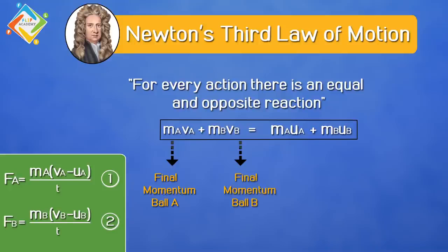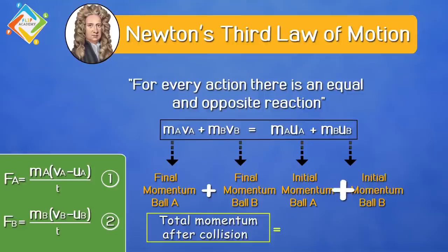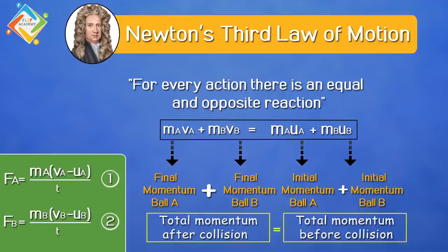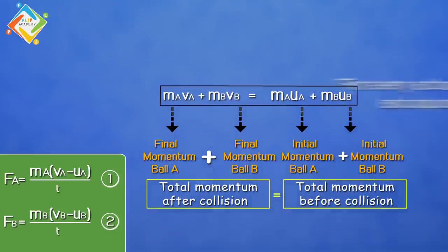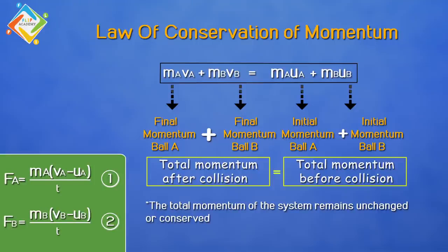Considering the left-hand side of the equation, mA·vA is the final momentum of ball A, and mB·vB is the final momentum of ball B. Adding these gives the total momentum after collision. On the right-hand side, mA·uA is the initial momentum of ball A and mB·uB is the initial momentum of ball B — adding these gives the total momentum before collision. This is the law of conservation of momentum: total momentum of the system remains unchanged and conserved, provided no external force acts on the system.